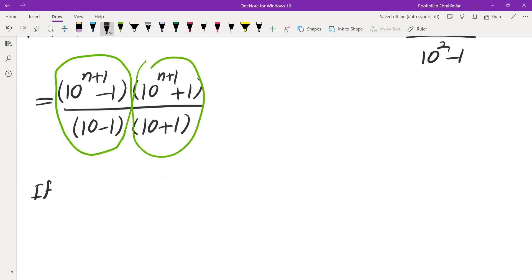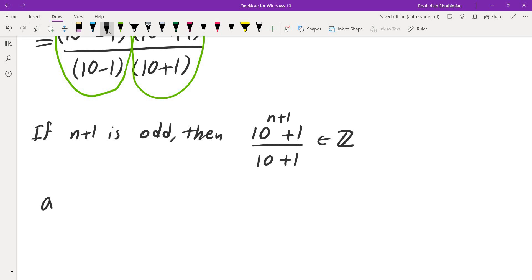So, if n plus 1 is odd, then 10 to the n plus 1 plus 1 over 10 plus 1, this is an integer, because I know if I have a to the power of m plus b to the power of m, that would be a plus b times another parenthesis, but this is if m is odd.